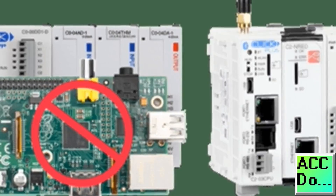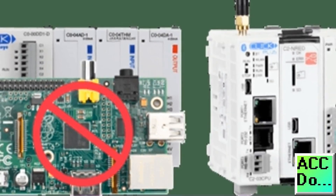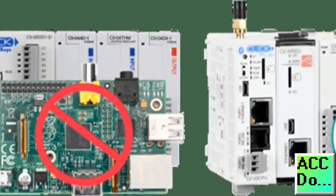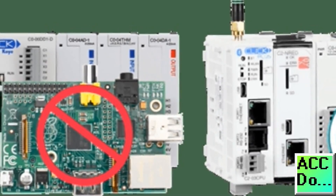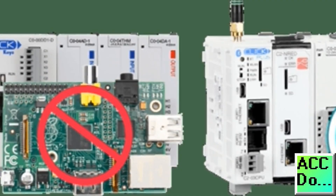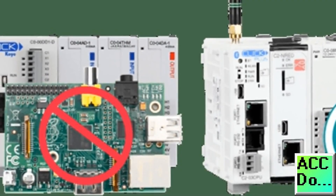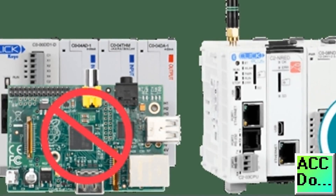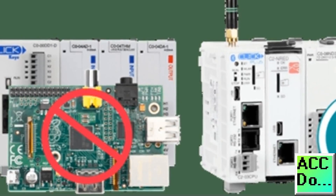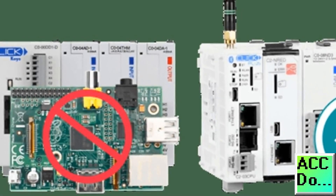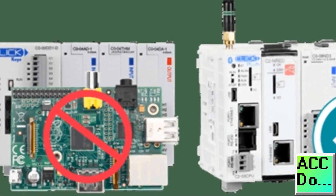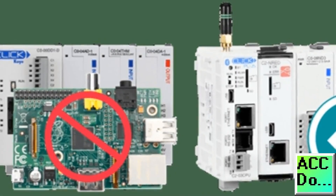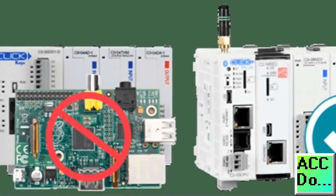The Qlik Plus CPU, when paired with the C2-NRED module, creates a powerful synergy. This combination allows for seamless integration of PLC functionality with the flow-based programming of Node-RED. The C2-NRED module has its own processor, ensuring that the main CPU remains unburdened while still having direct access to the PLC's memory and all necessary statuses.